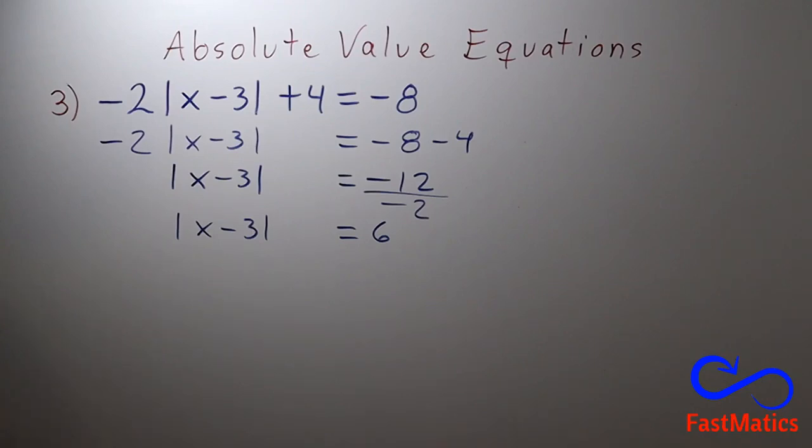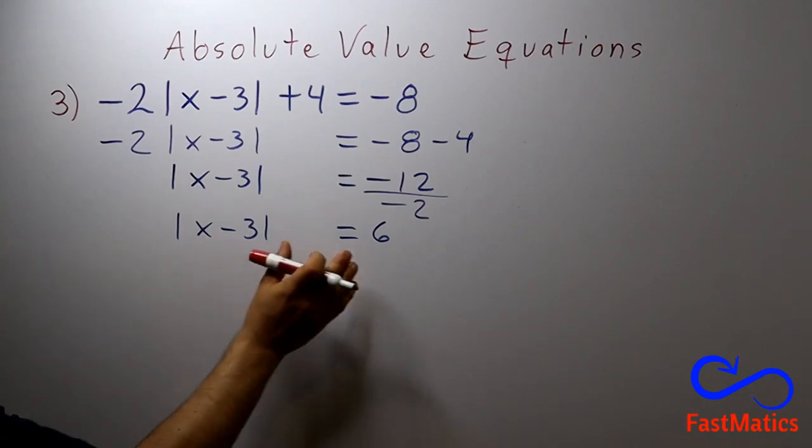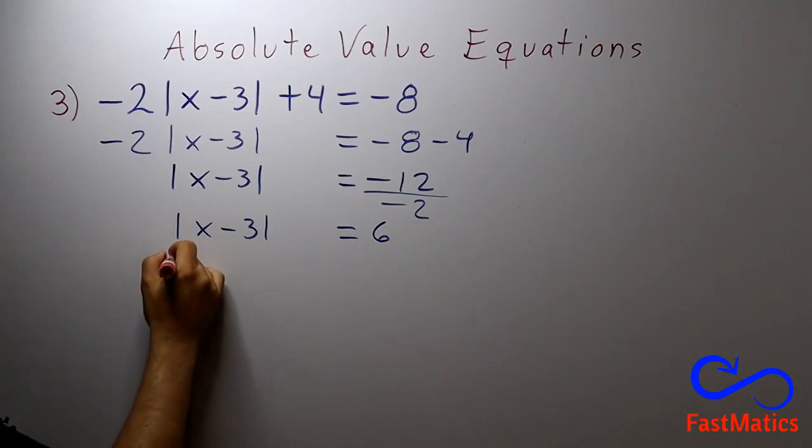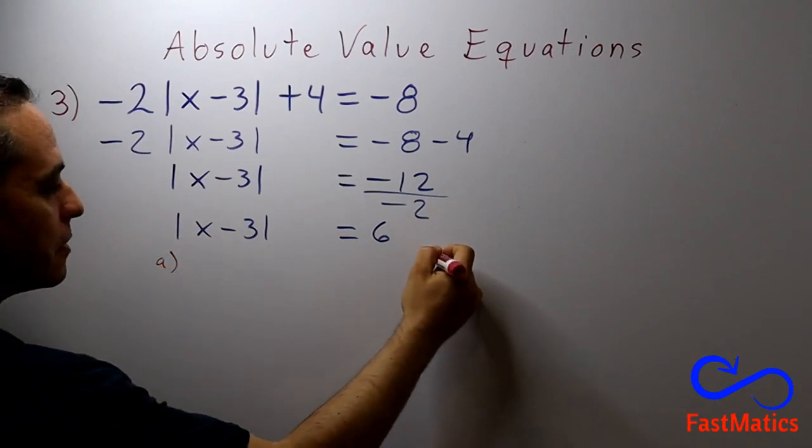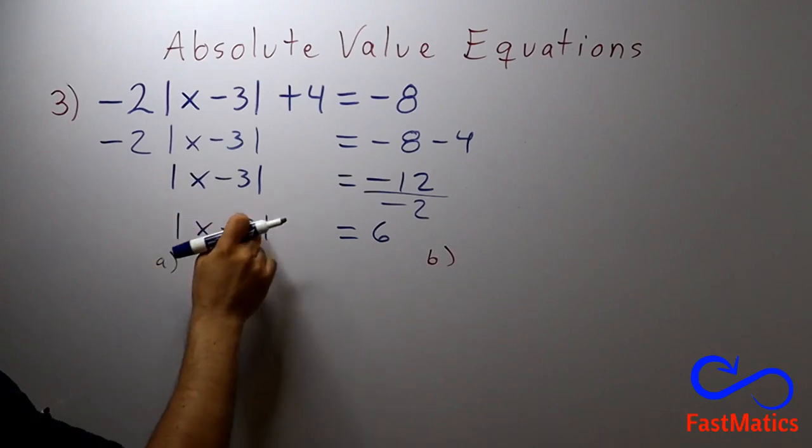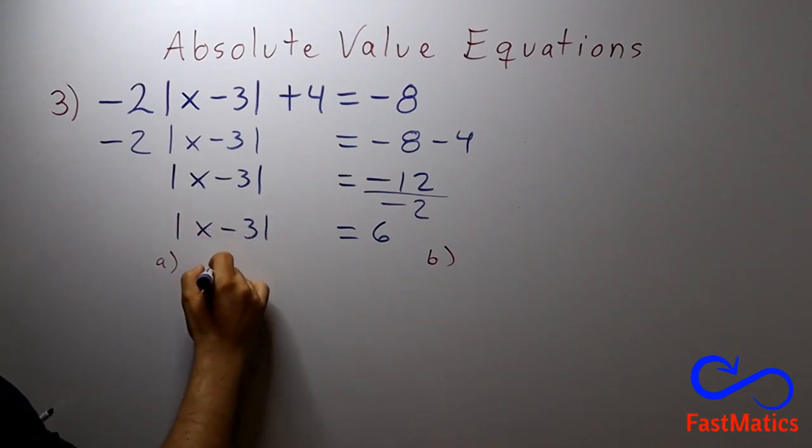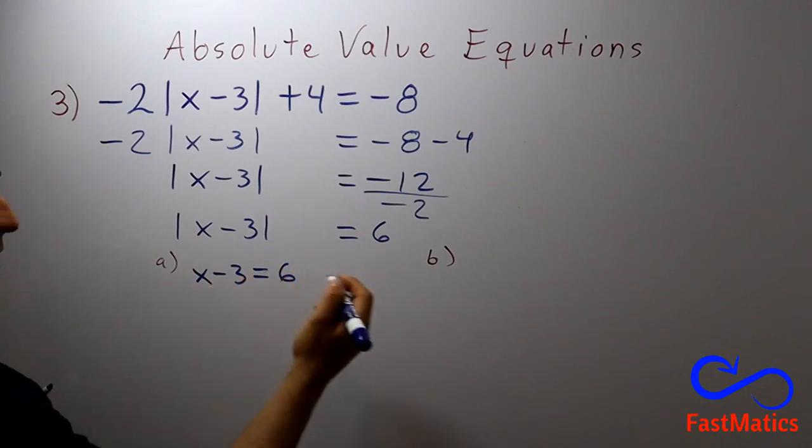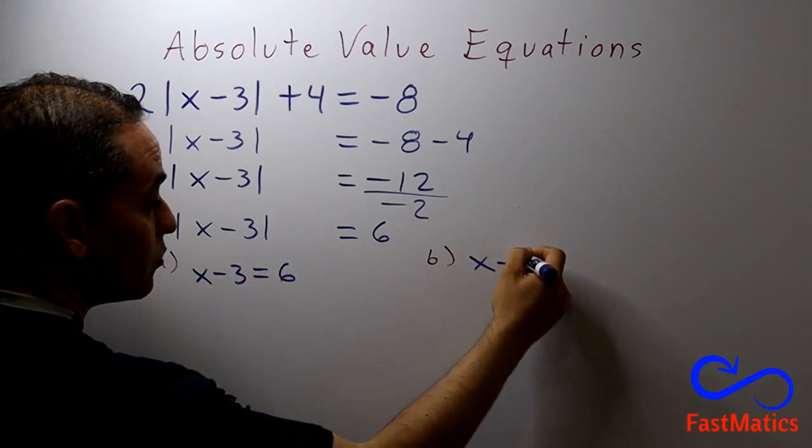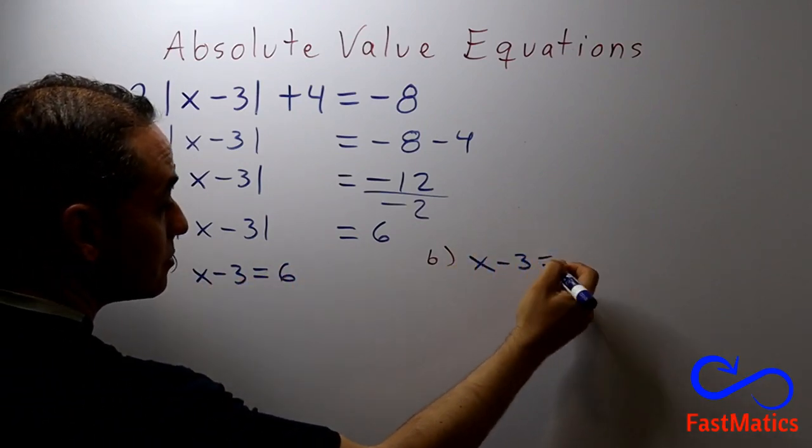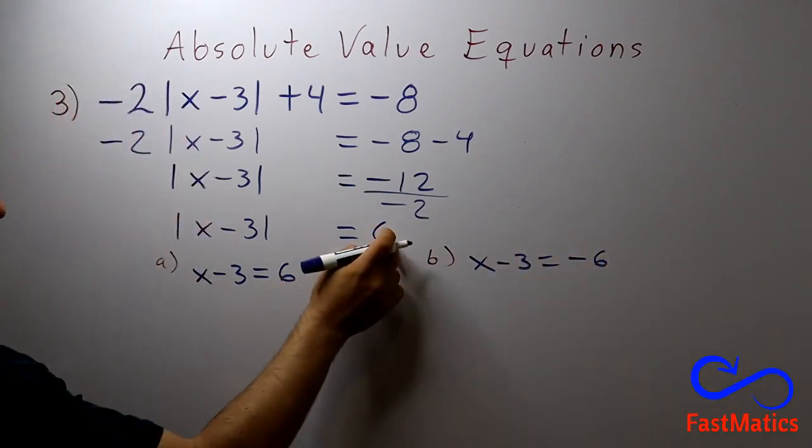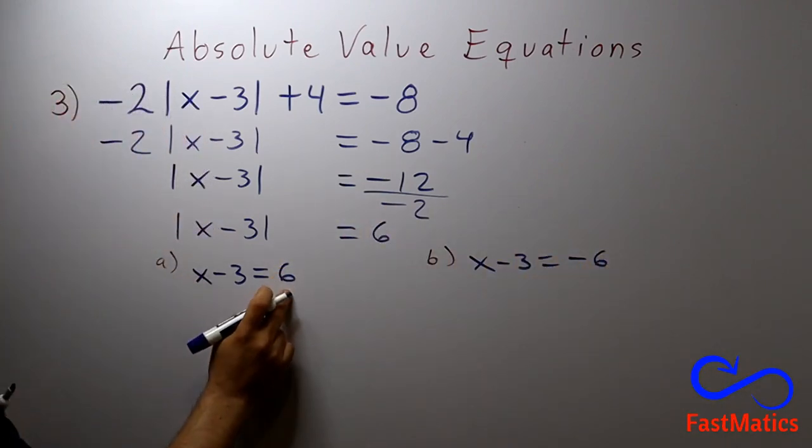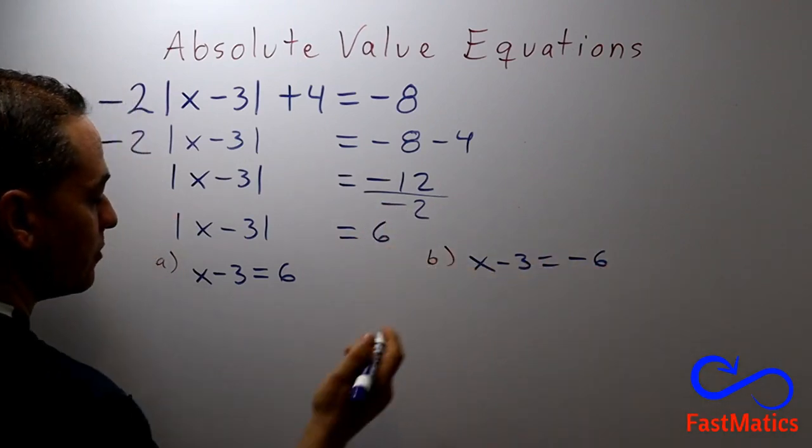And now we have a typical absolute value equation. Two possibilities. First of all, the expression without the absolute value is equal to 6. And after that, the expression without the absolute value is equal to negative 6. Always you have this part as a positive part and this part as a negative part.